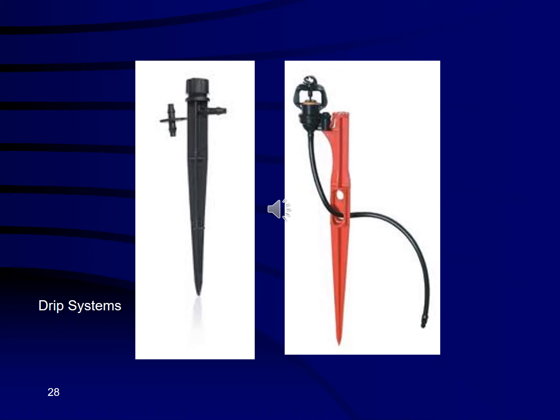Some other micro sprayers include the red one you'll often see in avocado orchards and a shrubler, which sends out a small umbrella of droplets. These produce bigger droplets, which means less misting and less loss of water to evaporation.